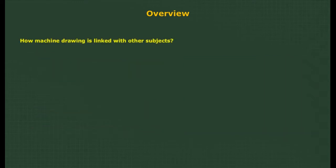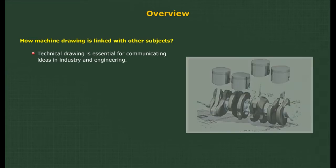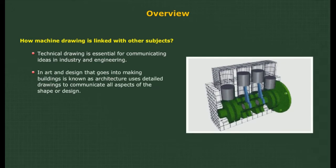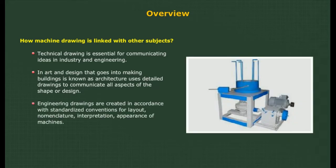Machine drawing is linked with other subjects. Technical drawing is essential for communicating ideas in industry and engineering. The art and design that goes into making buildings, known as architecture, uses detailed drawings to communicate all aspects of shape or design. Engineering drawings are created in accordance with standardized conventions for layout, nomenclature, interpretation, and appearance of machines.